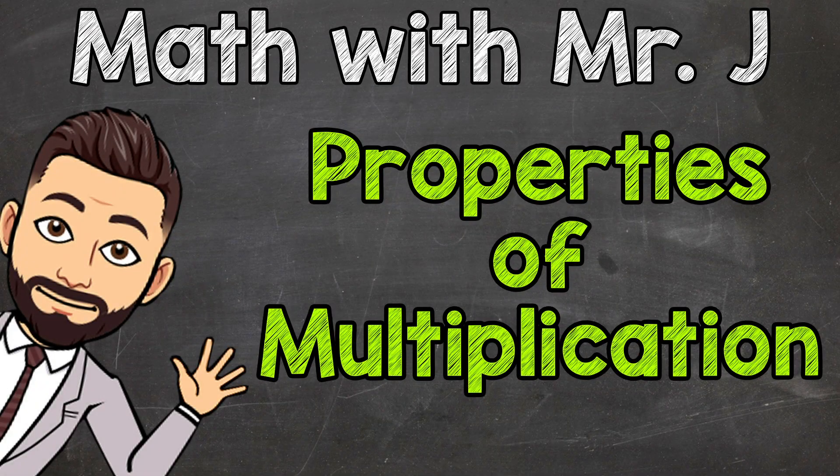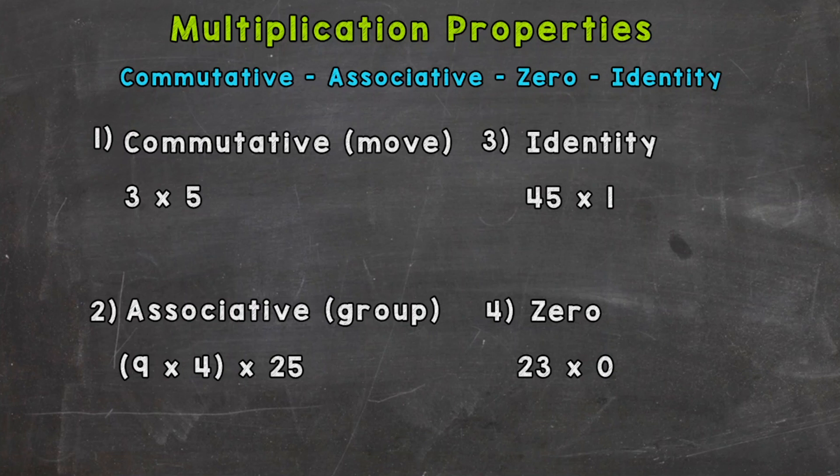Welcome to Math with Mr. J. In this video we are going to be discussing four multiplication properties: the commutative, associative, the zero, and the identity property. So we're going to go through examples for all four of those. Let's jump right into number one.